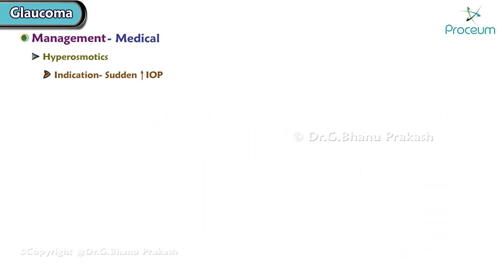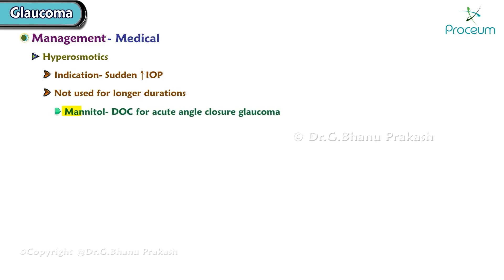Hyperosmotic agents are indicated in sudden increased intraocular pressure and are not used for longer durations. Mannitol is the drug of choice. Isosorbide is the oral hyperosmotic of choice. These are particularly used for acute angle closure glaucoma.